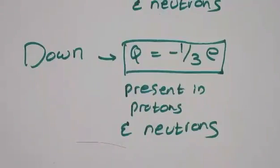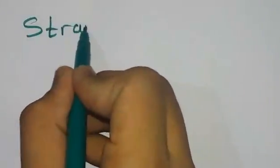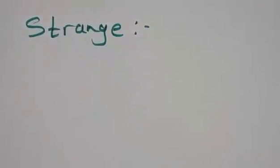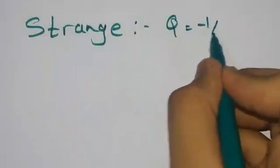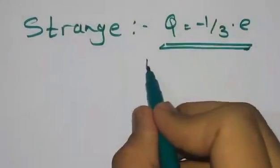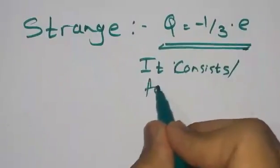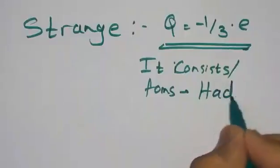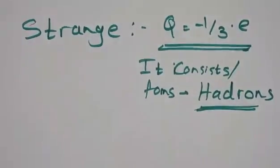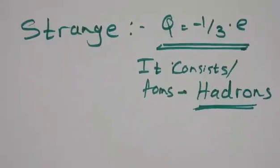I'm giving the most basic information because I don't want to go too advanced. Now we have the strange quark, having a charge of Q = -1/3 e. It consists of or forms hadrons.